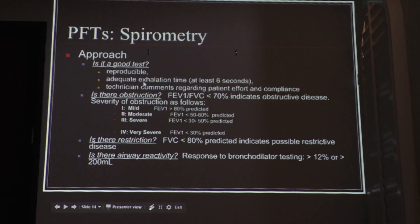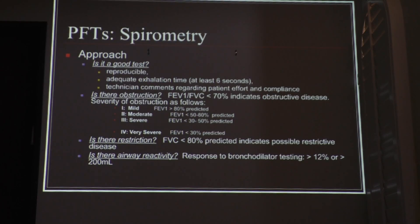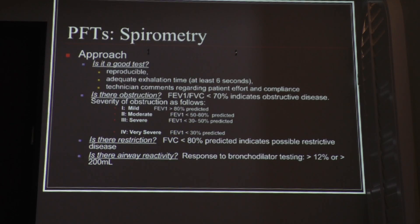The things you need to know: first, is it a good test? A good test is reproducible — a good respiratory technician asks the patient to do it again just to confirm. Number one, a good test is reproducible. Number two, they need a good exhalation period of six seconds. Look at the technician's comments regarding patient effort and compliance — especially in children, it's very difficult to get a good sample. If the FEV1 over FVC ratio is less than 70%, you're dealing with obstruction right away.